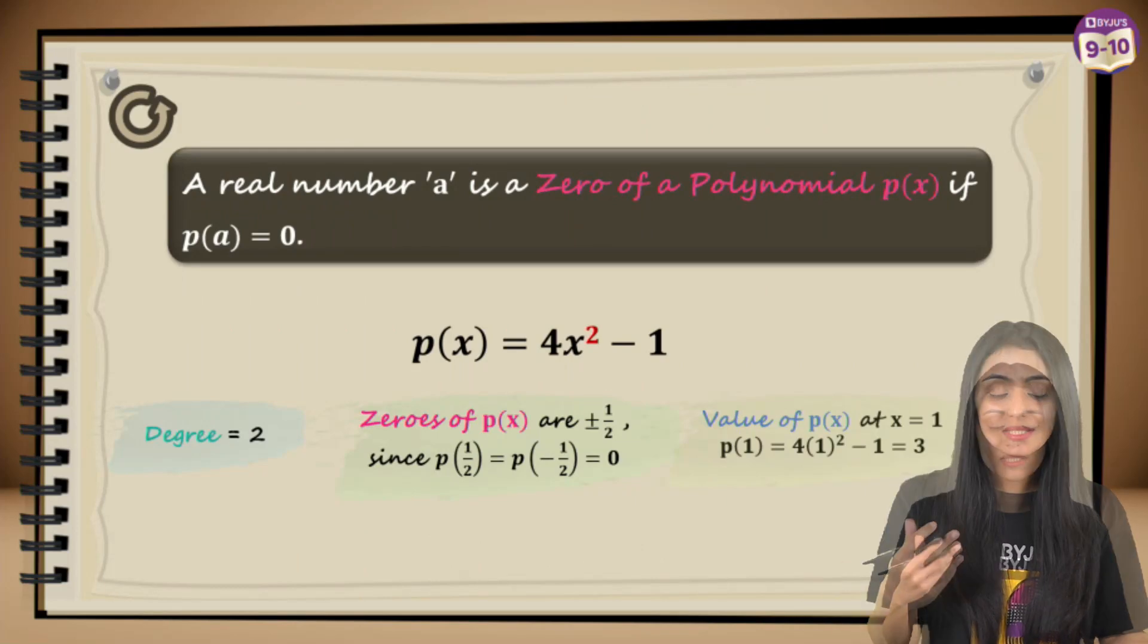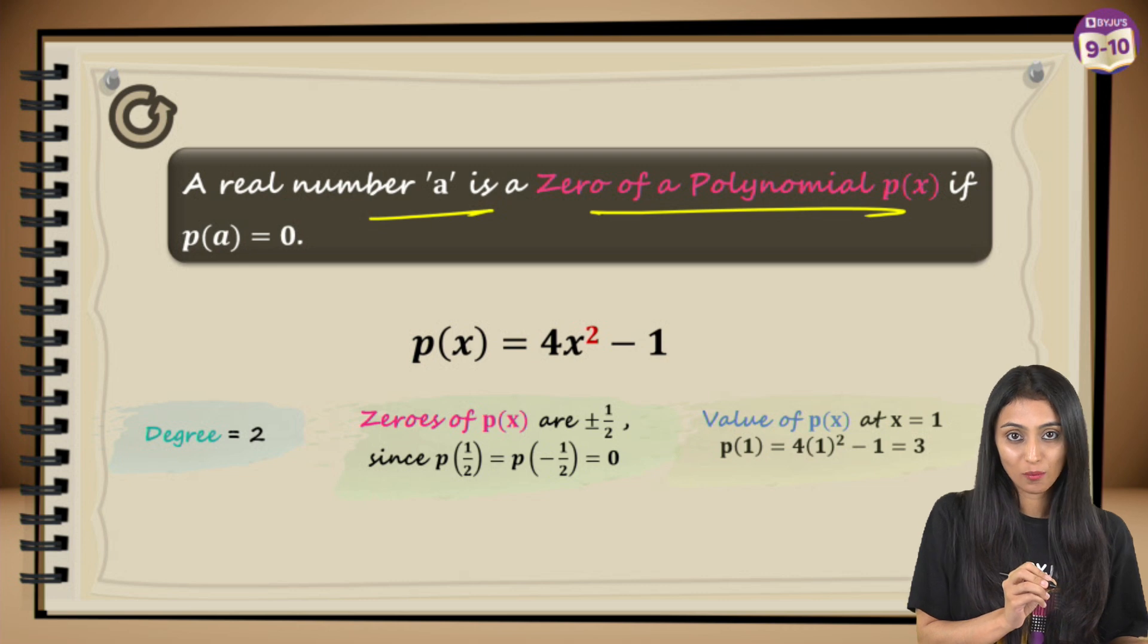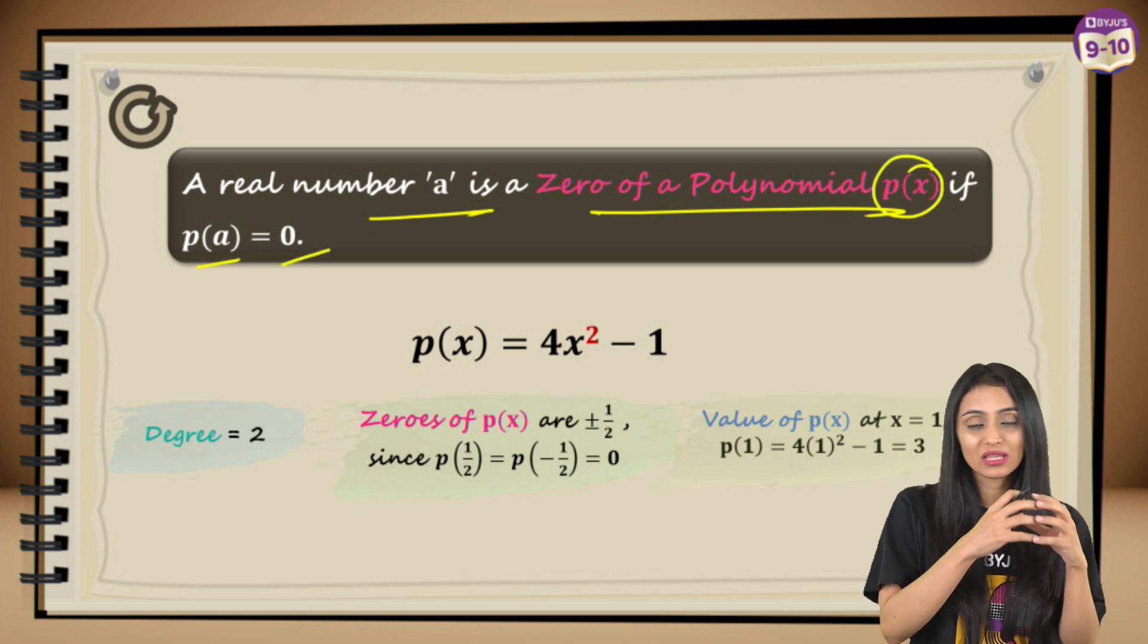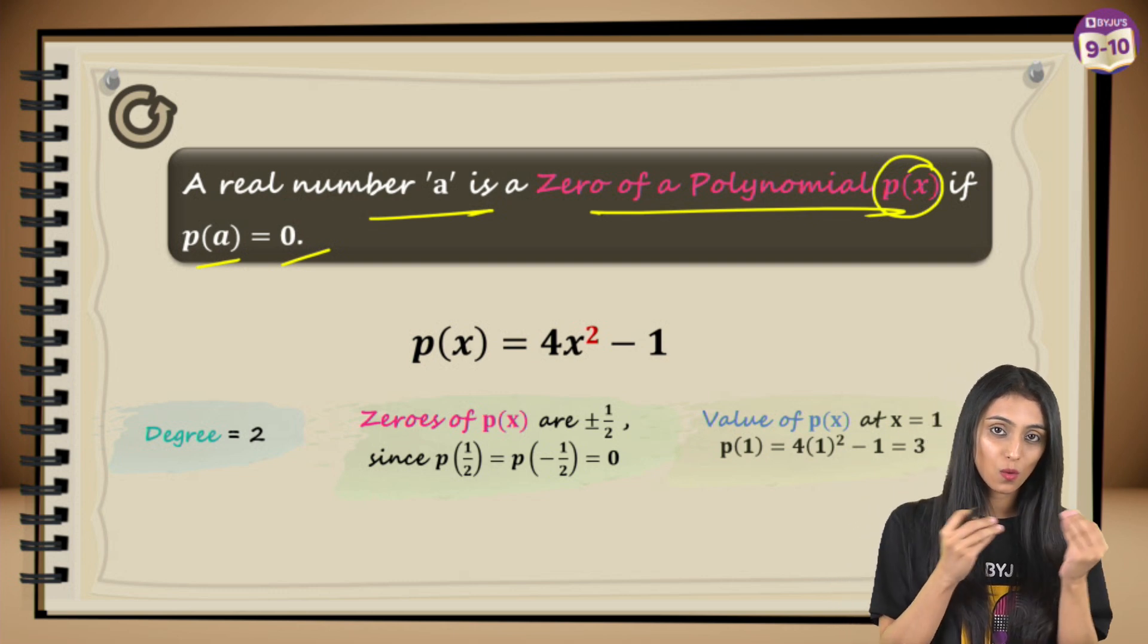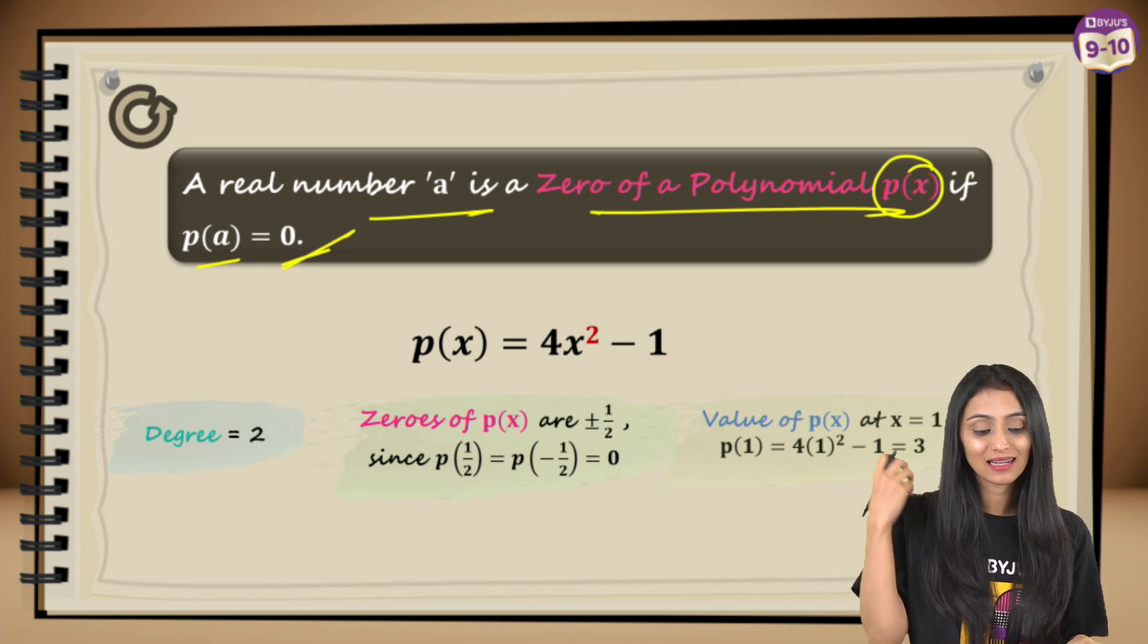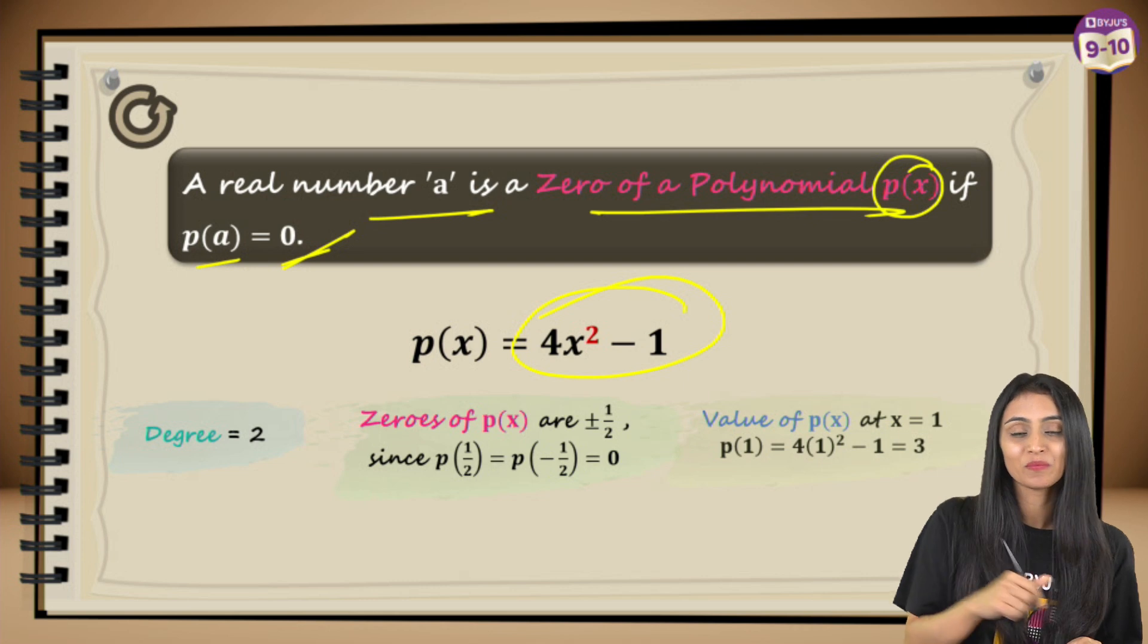Let's first understand what zero of a polynomial is. A real number 'a' is a zero of a polynomial p(x) if p(a) is zero. That means if in the entire polynomial, if I replace that x with this a and the entire value is zero, then we can say that that real number a is the zero of the polynomial.